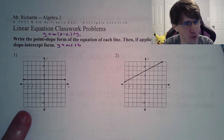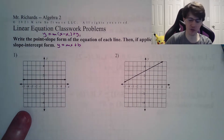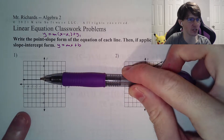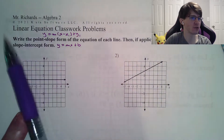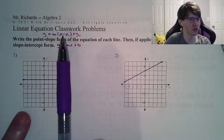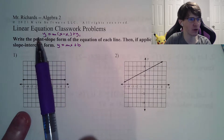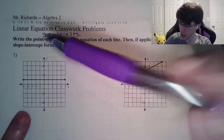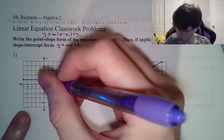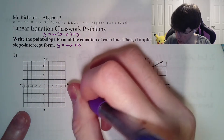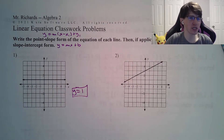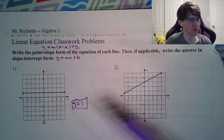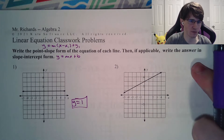Number one should be a freebie. The reason why it's a freebie is it is a flat line. Any flat lines have a slope of zero, which means that this m is zero, goes away completely, and we get y equals y1, or simply what the y value is all the time. The y value here is 1 the whole way through. This is the if-applicable part, because this is the slope-intercept and the point-slope form for this line.